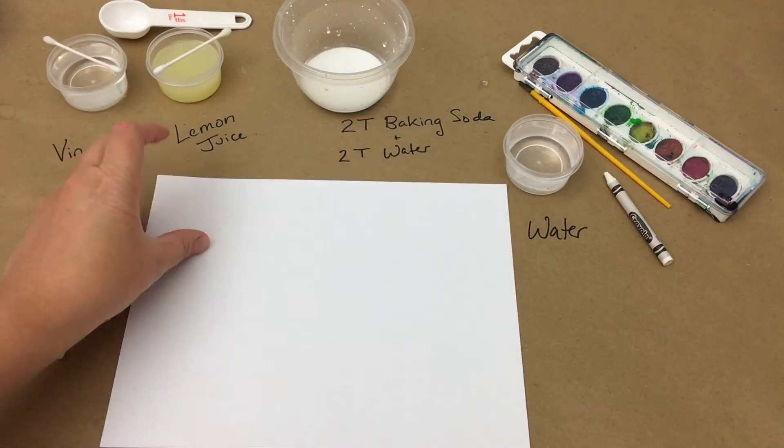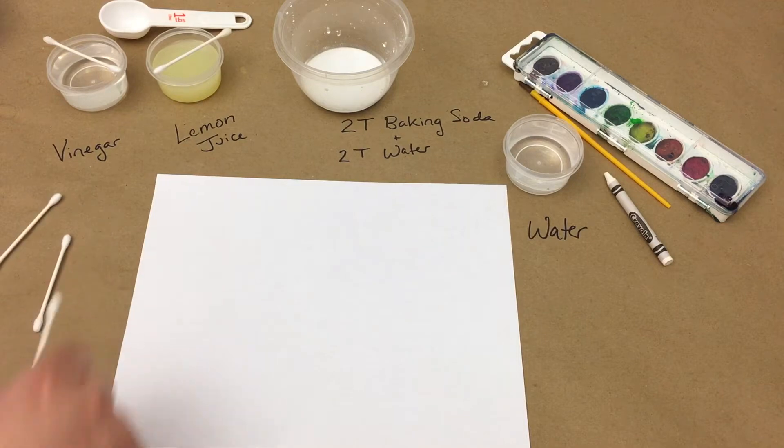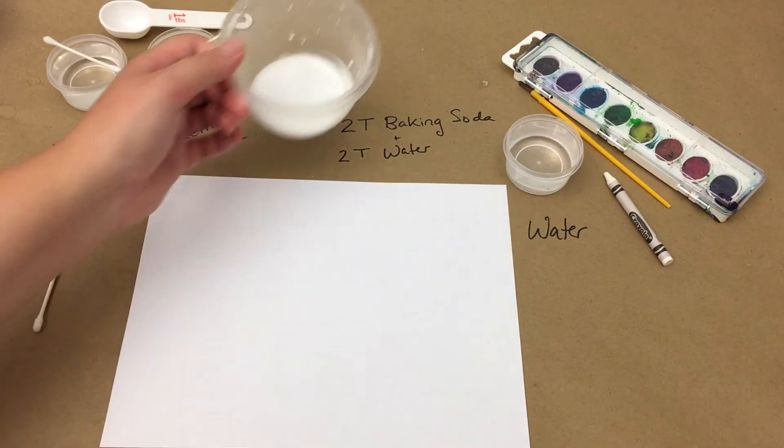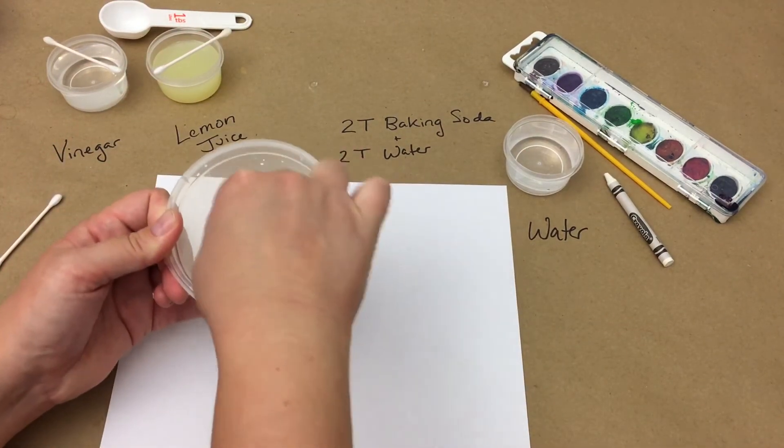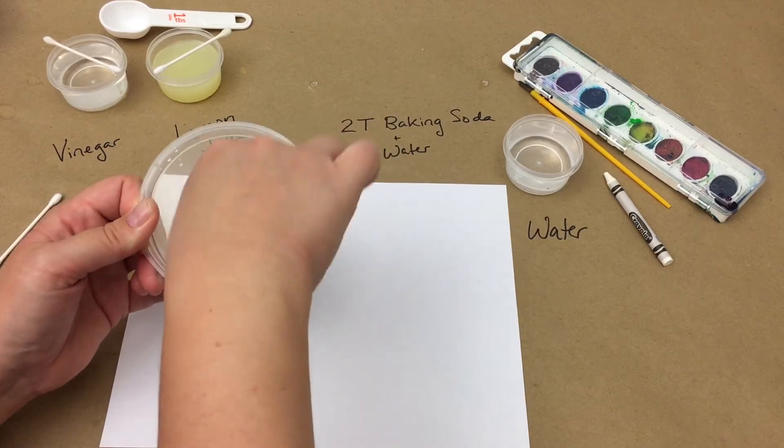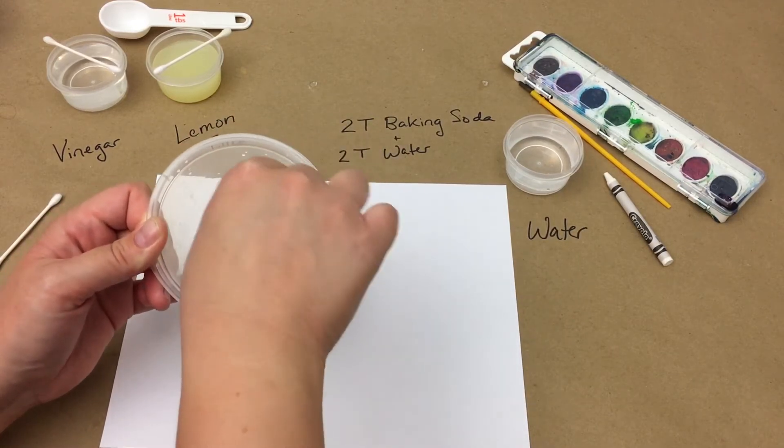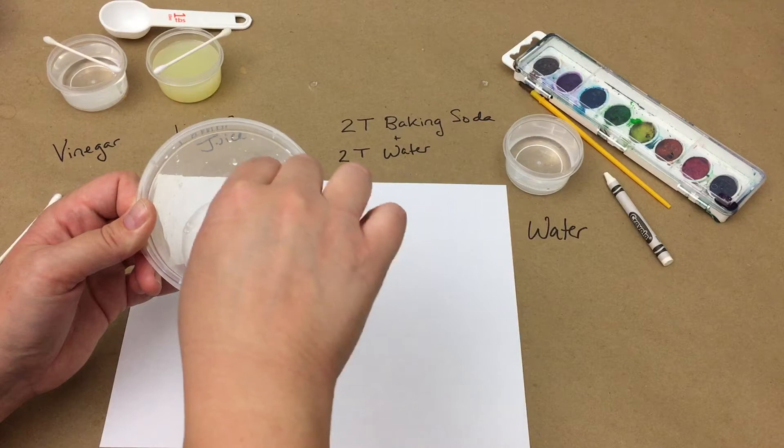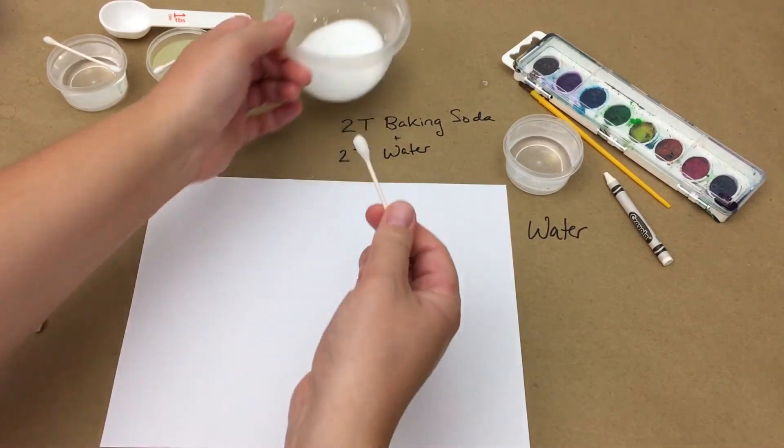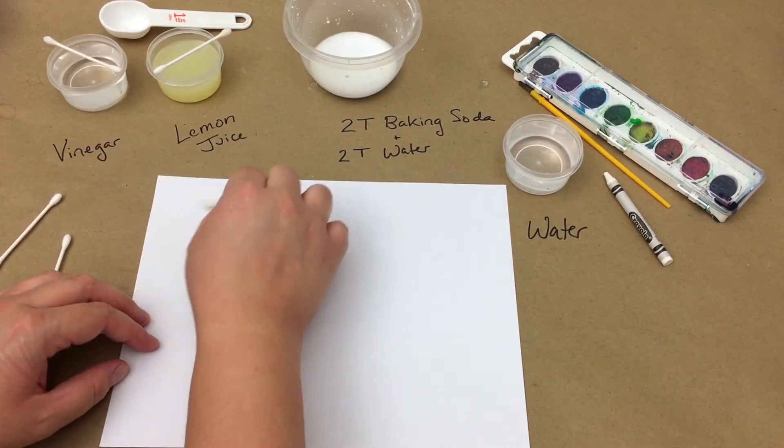Now let's try writing with our mixture of two tablespoons baking soda and two tablespoons water. Go ahead and take a cotton swab and mix it up if you mixed it at the beginning of the video and have been letting it sit. You want to make sure that the baking soda and the water are intermingled, so you get both on the cotton swab. Go ahead and begin writing your message.